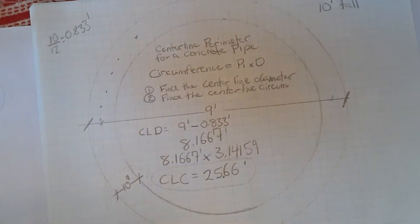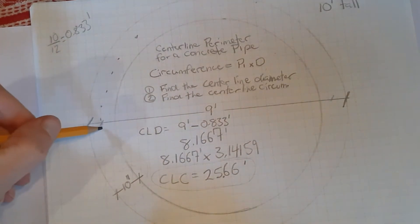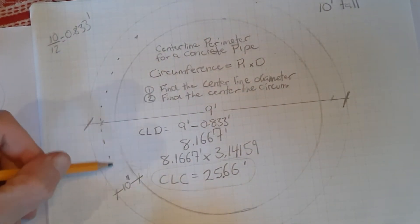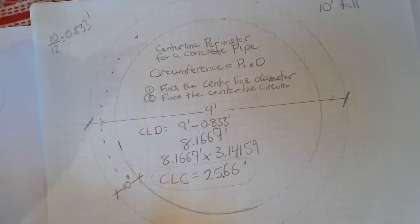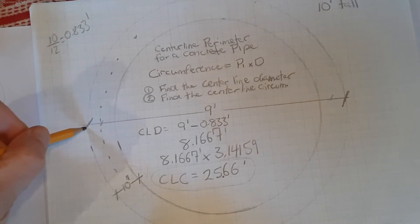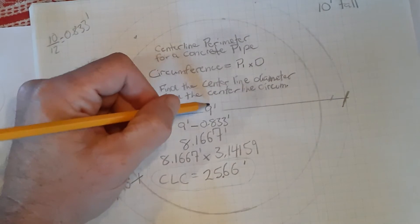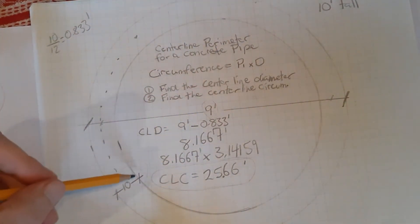When we're looking at this, we want to find the imaginary centerline that is between the inner circumference of the pipe and the outer circumference of the pipe. For that we need to know a few things. We know that the pipe from the outside wall to the outside wall is nine feet, and we know that the wall itself is ten inches thick.